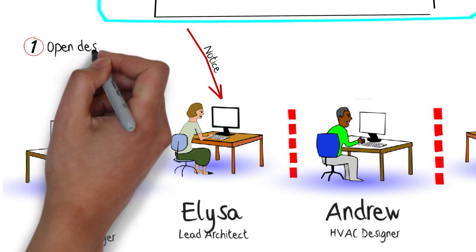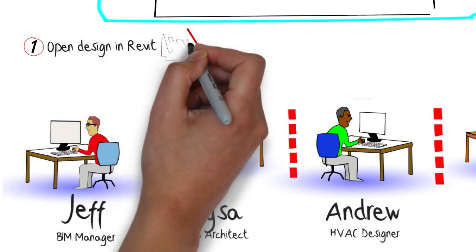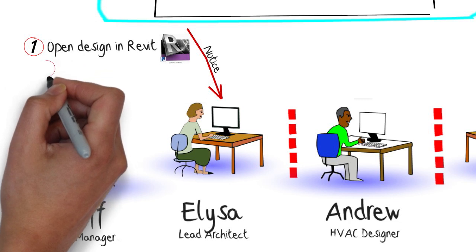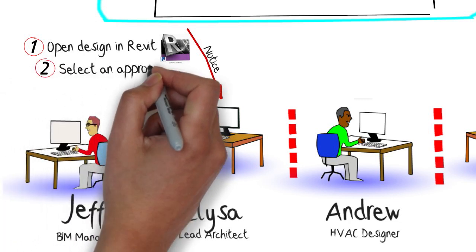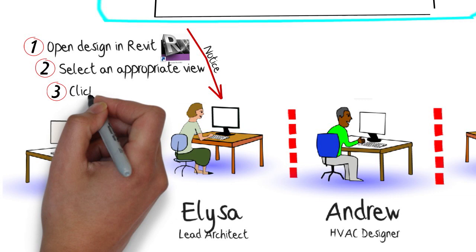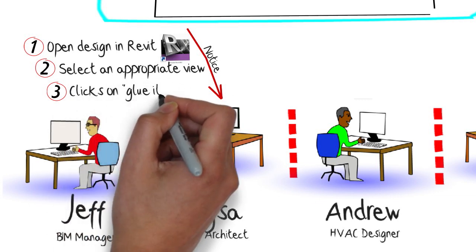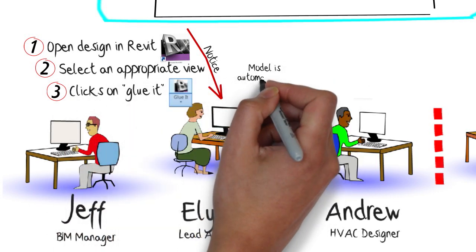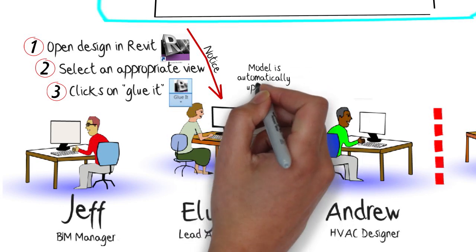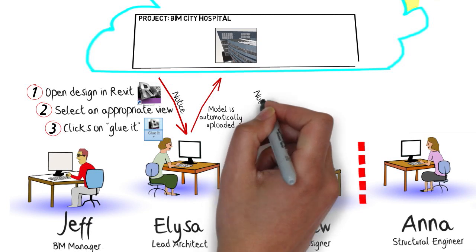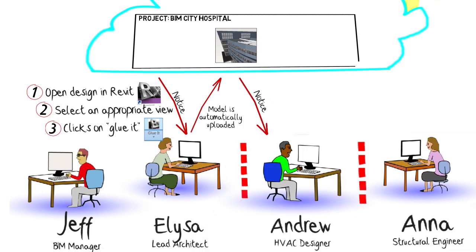The first thing she does is open her architectural design in Revit as she would normally. Next, she selects an appropriate view of her model. Now, she clicks on the Glue It feature, the add-in provided by BIM 360 Glue. When she does this, the current view of her Revit model is automatically uploaded into BIM 360 Glue.